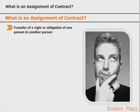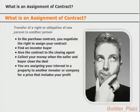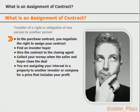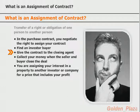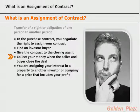An assignment of rights under a contract is a transfer of a right or obligation of one person to another. In other words, you find the deal and put it under contract to purchase it from your seller. In the purchase contract you negotiate the right to assign your contract, then once you find your investor buyer you fill out an assignment of contract, make sure it is given to the closing agent, and in most cases collect your money when the seller and buyer close the deal. Depending on what you and the investor agree to, they may pay you the assignment fee prior to closing.